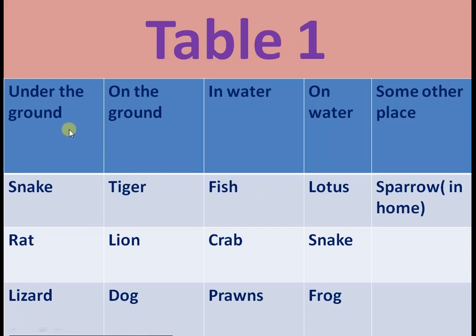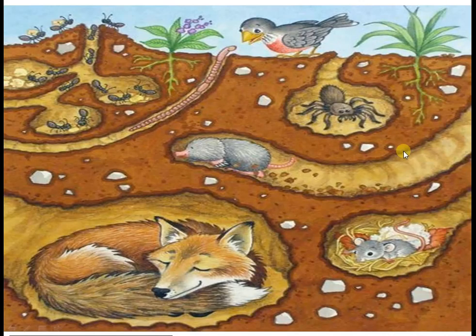Animals which live under the ground — examples are snake, rat, lizard. Some of the animals live on the ground — Tiger, lion, dog. Animals which live in water — Fish, crab, etc. Animals which live on the surface of the water — Lotus is a plant, snake, frog, etc. Sparrow in home is an example of 'some other place'. More examples of animals which live under the ground: Fox, rat, ants, etc.